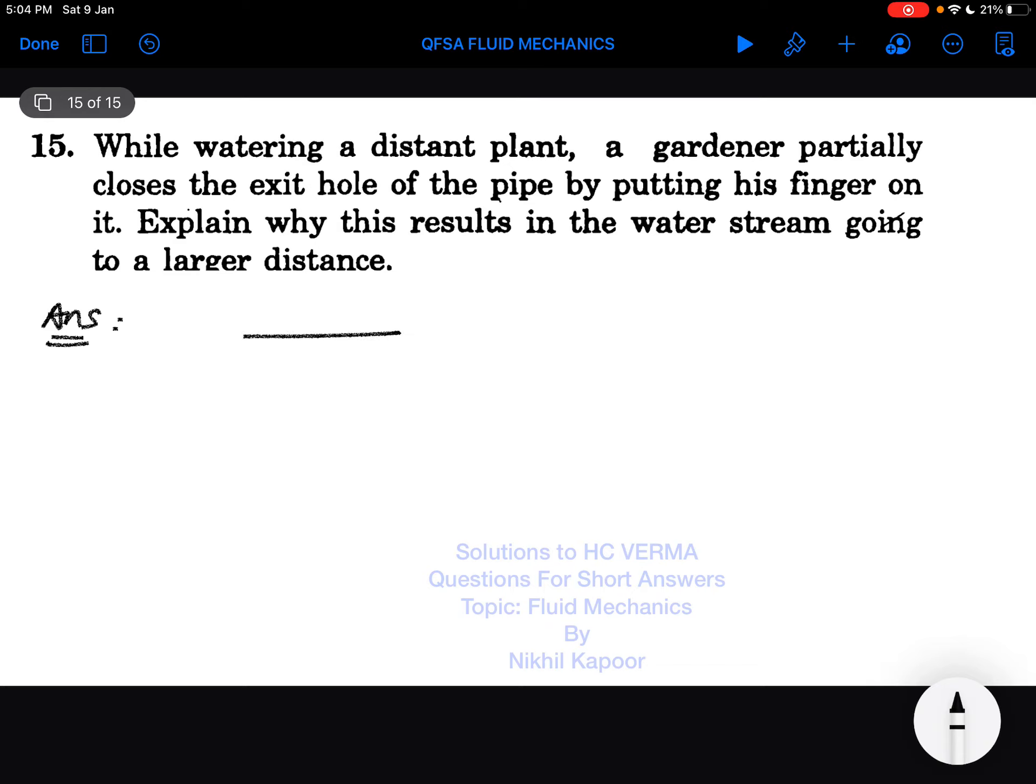So here is the pipe through which watering of the plants has been taking place over this field. Initially, the water is coming with some velocity, say v1, and it is falling like this to this horizontal distance.